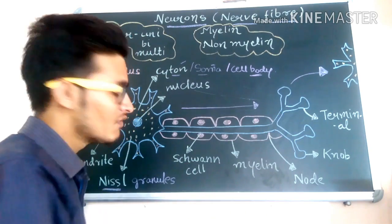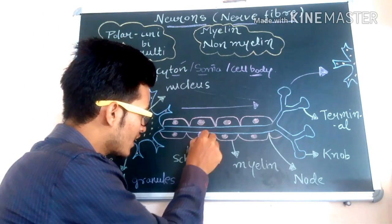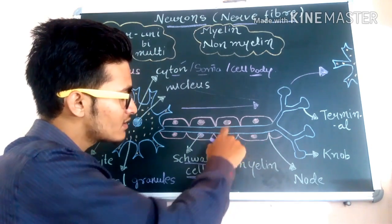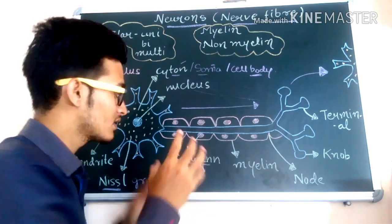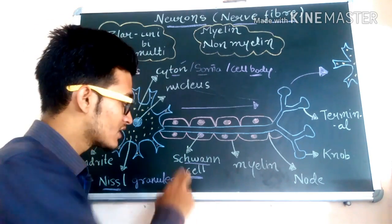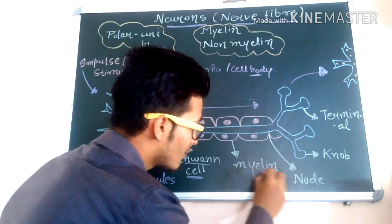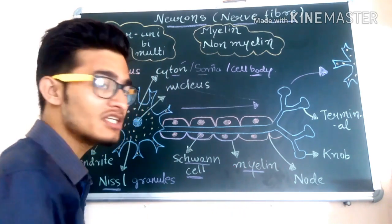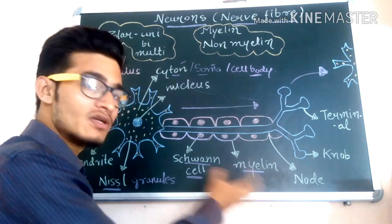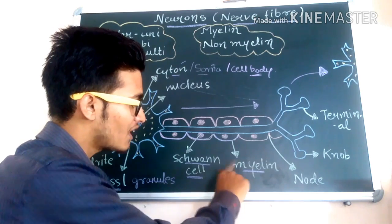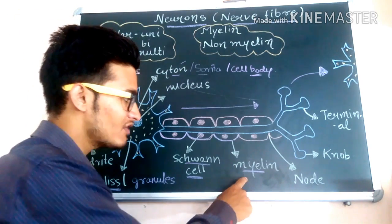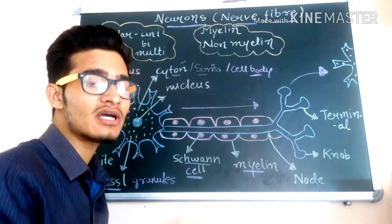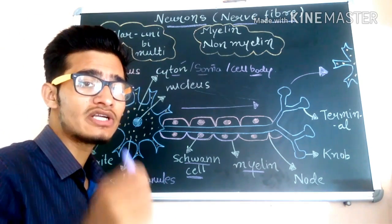The axon is surrounded by different kinds of cells known as Schwann cells. There are two types of nerve fibers based on Schwann cell function. In some nerve fibers, the Schwann cell produces a sheath known as the myelin sheath. Those nerve fibers which have a myelin sheath covering the axon are known as myelinated nerve fibers. In some cases the Schwann cell does not form a myelin sheath around the axon, and those nerve fibers are known as non-myelinated nerve fibers.